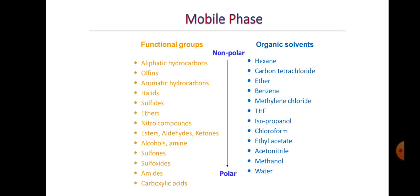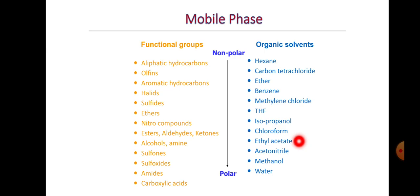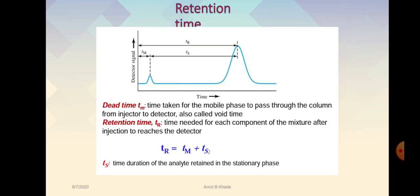We have many options to play with the polarity and non-polarity of the solvent system. Based on the functional groups in the analyte, we can select an appropriate mobile phase. For example, aliphatic hydrocarbons and olefins prefer non-polar solvents, while acids, aldehydes, ketones, and alcohols are relatively polar. Using the polarity index, we can develop an appropriate mobile phase for the chromatographic system.